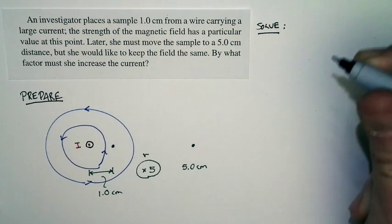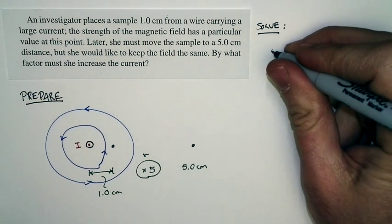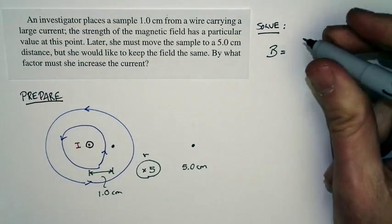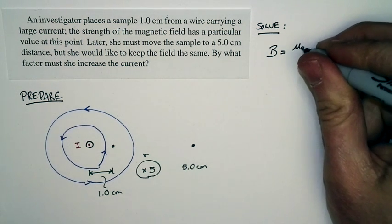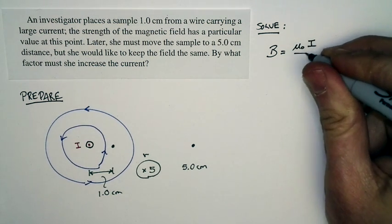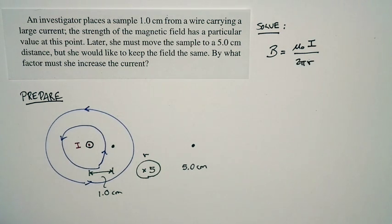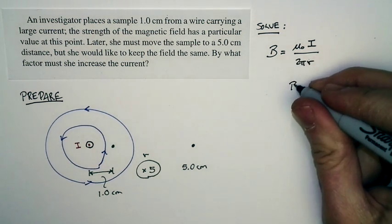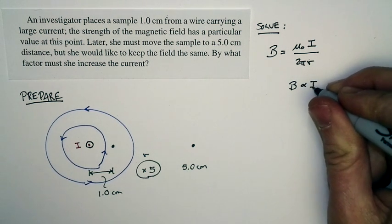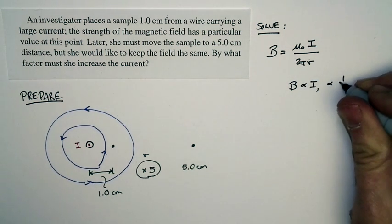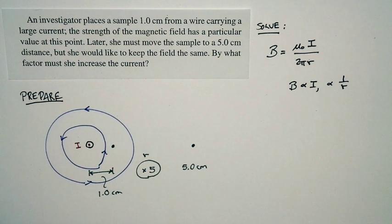So the solution looks like this. Let's recall the relationship for the magnetic field near a current carrying wire. It's equal to mu zero times I over two pi times r. So you can see the magnetic field is proportional to the current and it's proportional to one over the distance.